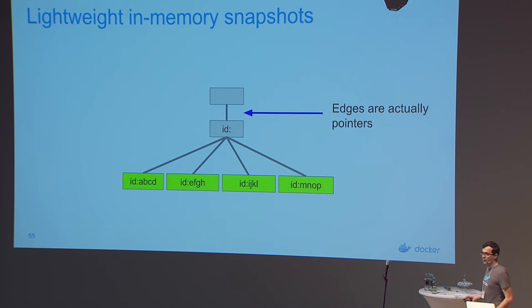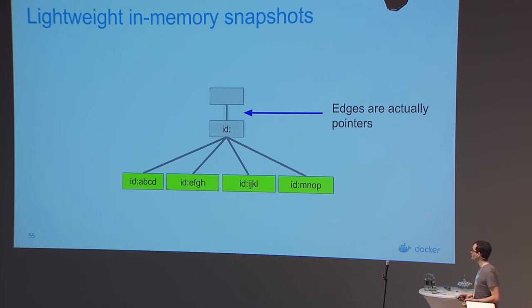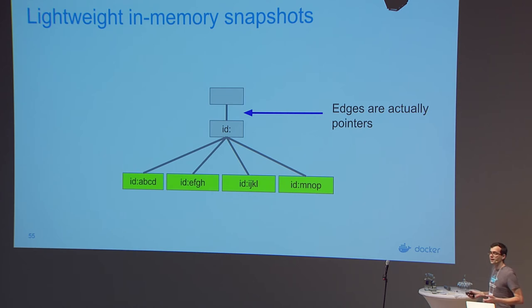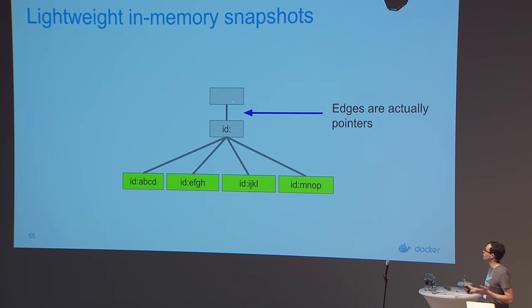What's really cool about this radix tree structure is it gives great properties for fast snapshots in memory. In our implementation, the lines in the tree are actually pointers. If we have a pointer to the root node, that means we have an entire view of the tree. As long as nodes in the tree are immutable, all we need is a pointer to the root node for a consistent view of all the information.